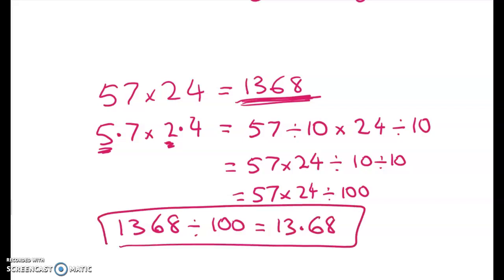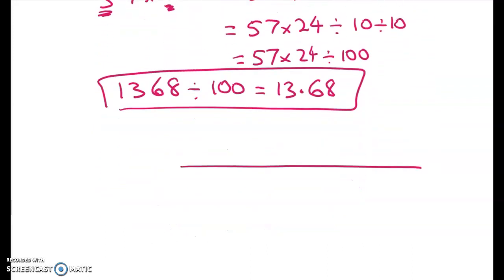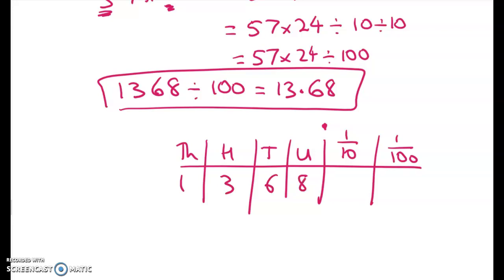Now we've got 1,368. If we want to divide that by 100, everything moves over two place values. So that becomes 13.68. Now if you need to do that more slowly, use a place value column like this. It's thousands, hundreds, tens, and ones. Here's my decimal point. Here's one tenth, one hundredth. We've got 1,368. We want to divide by 100. So we have to come over two place value columns for everything: 1, 3, 0.68.